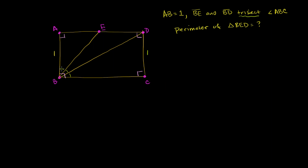The other thing we know is that this angle is trisected. We know the measure of this angle — it was a right angle, a 90-degree angle. So if it's divided into three equal parts, that tells us each angle is 30 degrees. This angle is 30 degrees, this angle is 30 degrees, and this angle is 30 degrees. So we're dealing with 30-60-90 triangles.